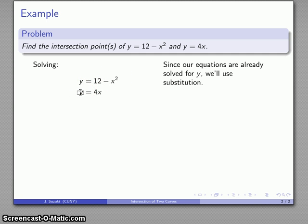Well, here's a y. I'll replace that with 12 minus x squared, and I get this equation: 12 minus x squared equals 4x.